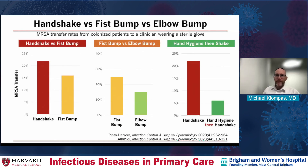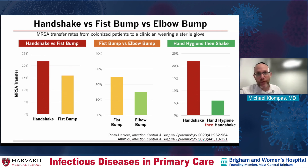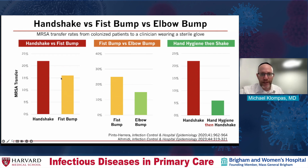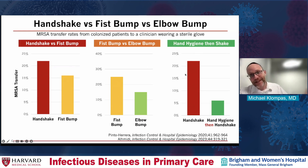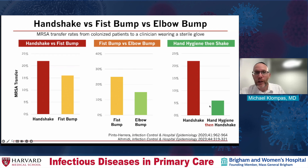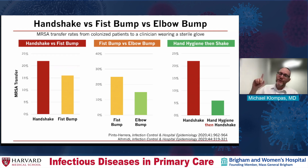What about the fist bump or the elbow bump? Can that do the magic for you? Here's actually some data: looking at MRSA transfer rates from a colonized patient to a clinician wearing a sterile glove, the fist bump is associated with less MRSA transfer compared to the handshake. The elbow bump and fist bump are pretty equivalent, with the elbow bump slightly better. But hand hygiene itself does better than any of these — a handshake after hand hygiene gets you to a lower level of contamination than the fist bump or elbow bump. So you don't have to resort to fancy methods; you just need to wash your hands.